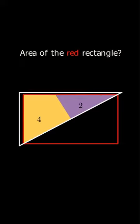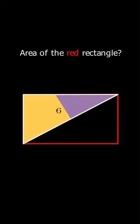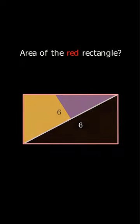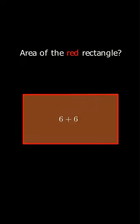So the area of half of the red rectangle is 6 and the other half must also be 6. So the total area must be 12 square units.